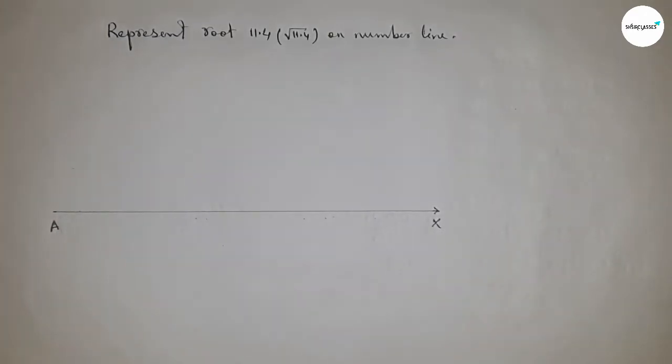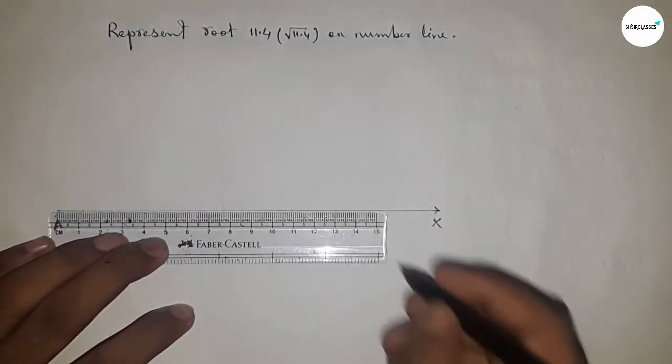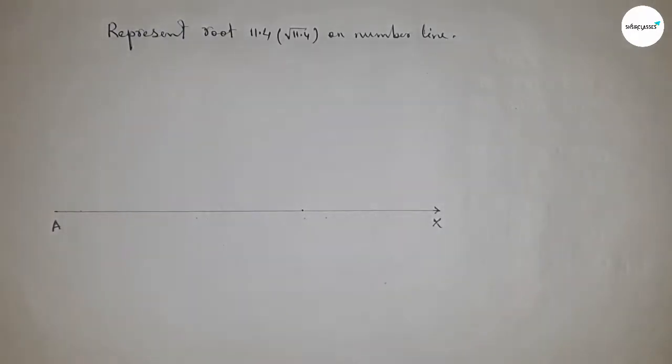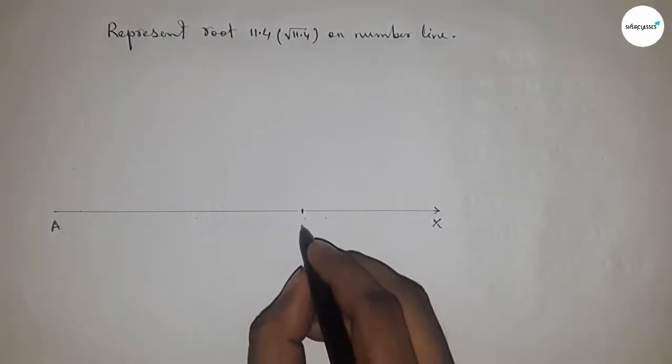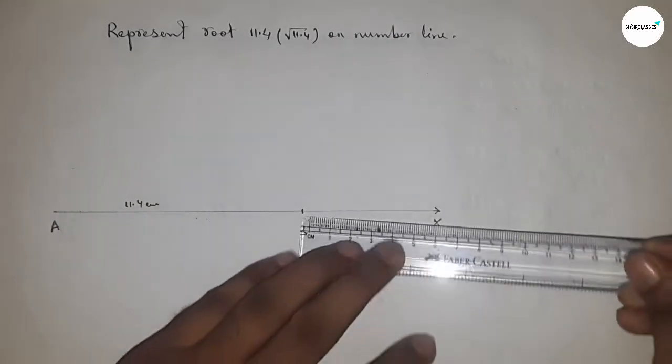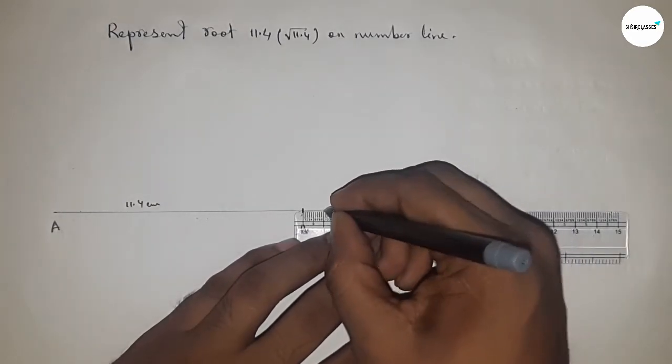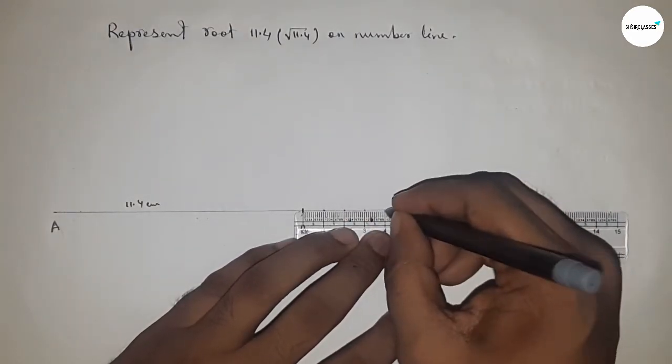Now take 11.4 centimeter using a scale. This is 11.4 centimeter, and this is point B. So AB = 11.4 centimeter. Next, mark the numbers on the line from B to X using a scale.